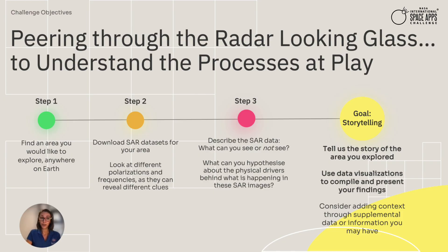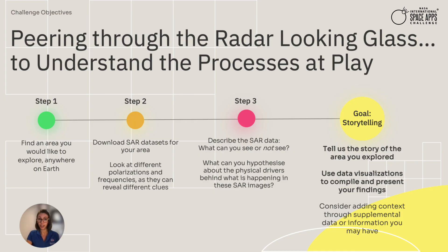Next, you will have to download a freely available SAR dataset from your chosen area using the list of resources provided in the challenge information. The incredible thing about SAR data is that different polarizations and frequencies can give you different types of clues about the Earth's surface. For example, oil spills are seen in one wavelength but not others, or forest canopies are highlighted in only certain polarizations. So play around with the different SAR data to get the most clues and solve the riddle of your chosen area.